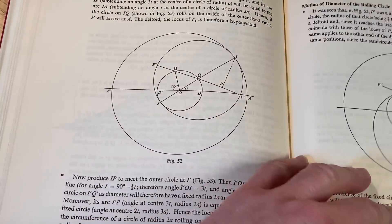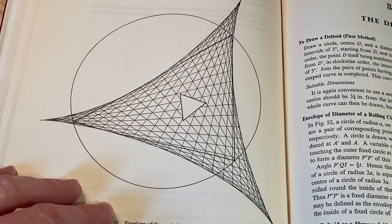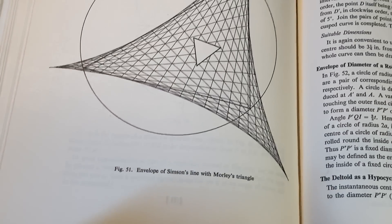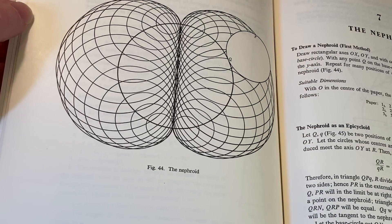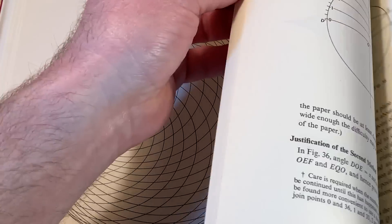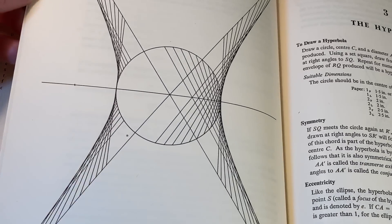Let's look at the Deltoid — that's the Deltoid, that's cool. It says: envelope of Simson's line with Morley's triangle. The Nephroid. And then here's the Limacon. And then we have the Hyperbola — the way it's drawn really makes it look more hardcore. That's a Hyperbola. Yeah, you don't mess with that one.